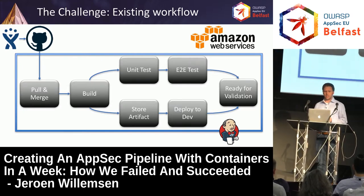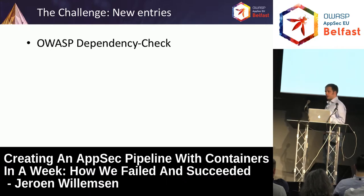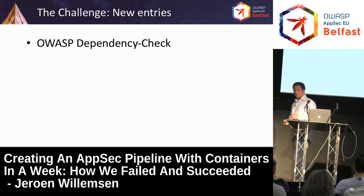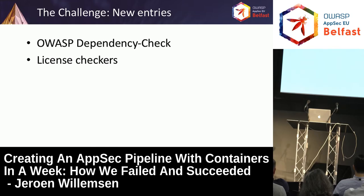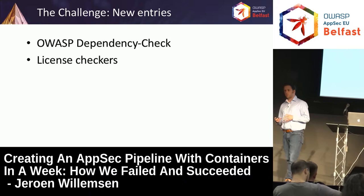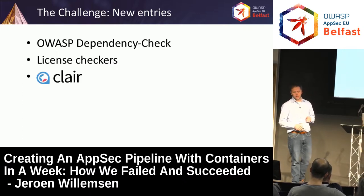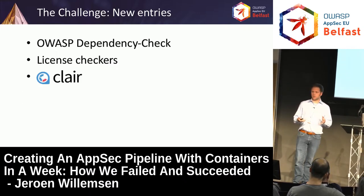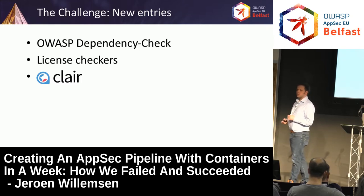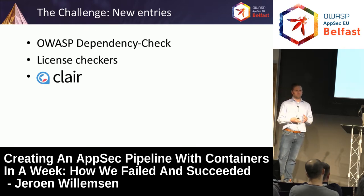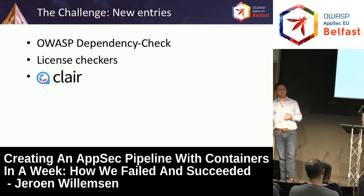Why automate security if development hasn't been automated yet? What did we have to add? First, we started adding the OWASP Dependency Check and a few other dependency checkers for third-party vulnerabilities. We also added license checkers to verify we weren't violating internal company policies — they had a policy on which licenses they'd accept for third-party resources, and normally people had to manually check that, which was cumbersome.